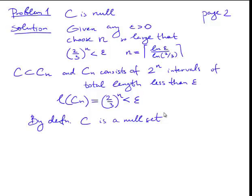So now the next step is to prove that C is actually an uncountable set. That is page 3, and the next problem, problem 2, is to show that set C is uncountable. In this case we are going to use so-called ternary arithmetic.